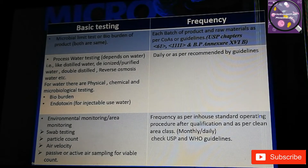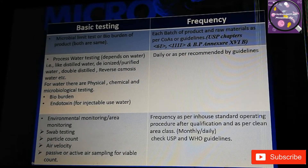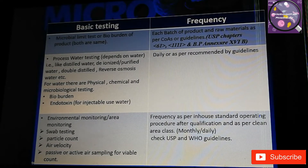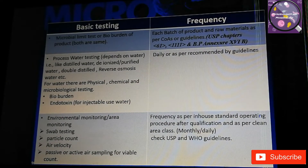The next test is water testing. There are different kinds of water used in pharmaceutical and food industries, such as distilled water, deionized purified water, and double distilled water. We do physical, chemical, and microbiological testing. The microbiological testing includes bio burden and endotoxin testing, and endotoxin testing is for water used in injectables or parenterals.